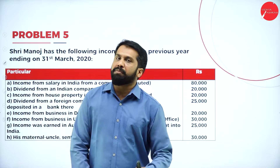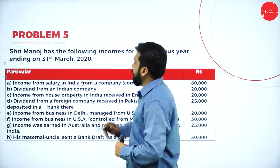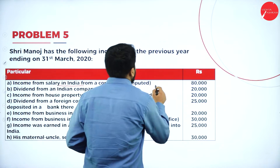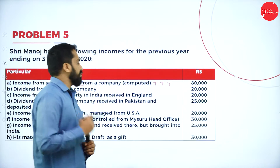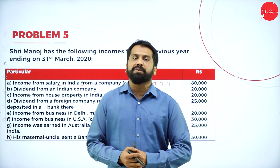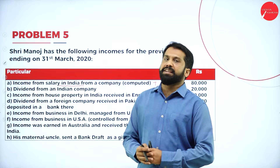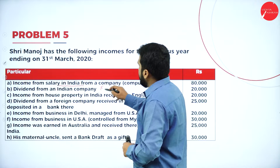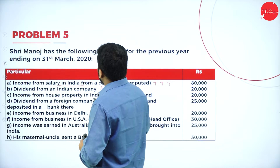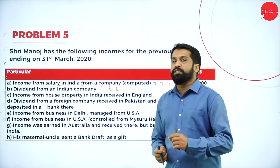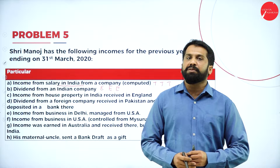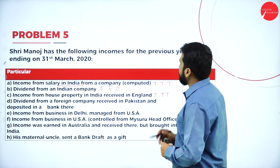Income from salary in India — anything which is in India is taxable in the case of all three persons: taxable, taxable, and taxable. Next, dividend from Indian company — any dividend received from an Indian company is exempted for all three: exempted, exempted, and exempted. Then income from house property in India received in England — anything which is in India, irrespective of further information, is taxable for all three cases: taxable, taxable, and taxable.